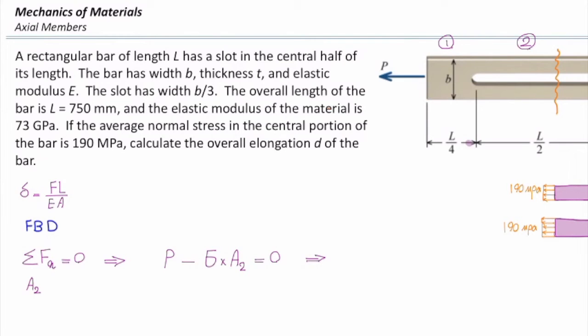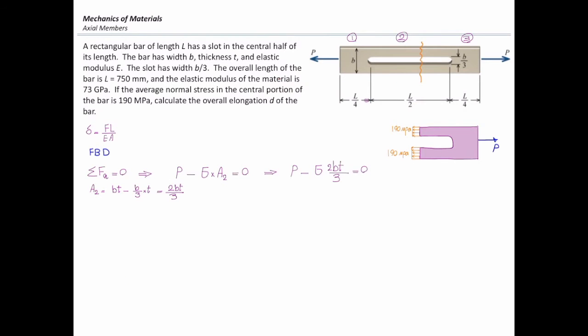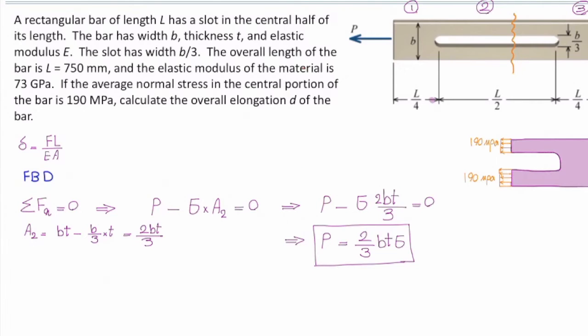The thickness is T. That would be B times T minus B over 3 times T, which is equal to 2/3 of BT. If I plug it back into that equation, I will get this equation for P. I determined force as a function of stress, as a function of width and thickness of this plate.